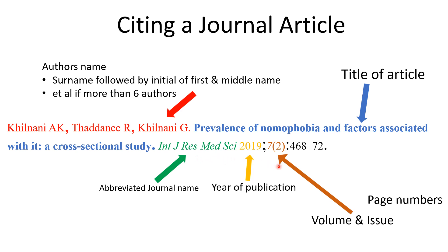Finally, we write the page numbers. This article has page numbers 468 to 472. In the Vancouver system, we do not repeat common digits — since 4 is common, we write 468 to 72. These are the six components of writing a reference in the Vancouver system.